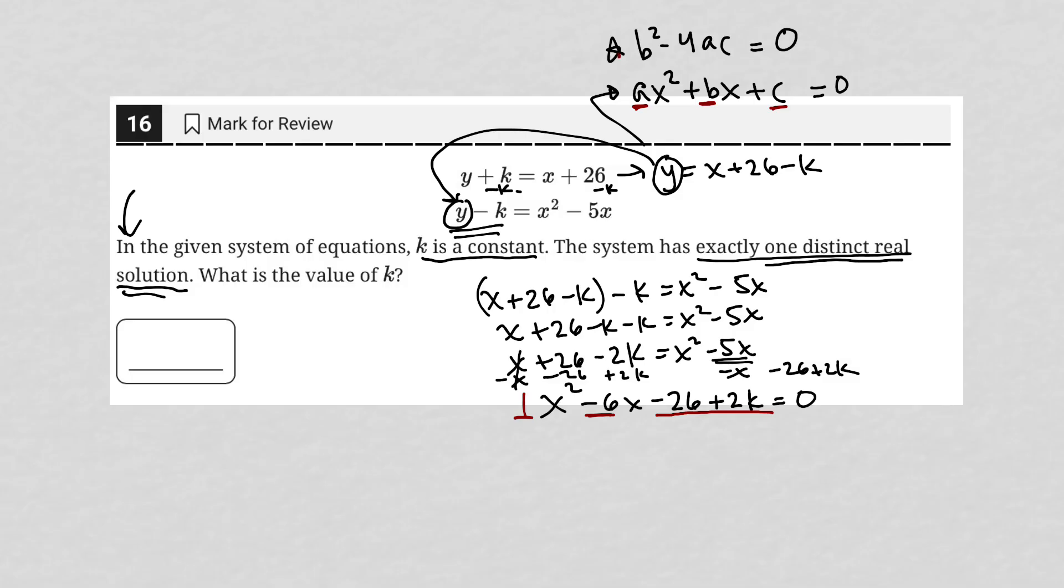So I'm going to plug that into my determinant here that I mentioned earlier. So we'd have b squared, so negative 6 squared minus 4 times a is 1 times c is negative 26 plus 2k. And again, because we know it's only one distinct real solution, we set that equal to 0.